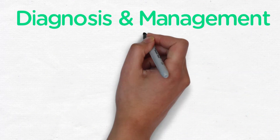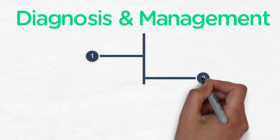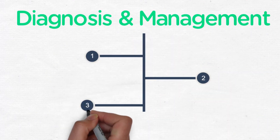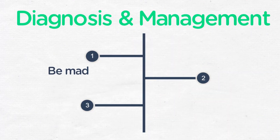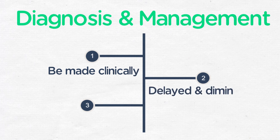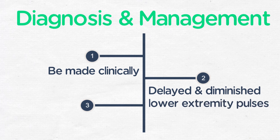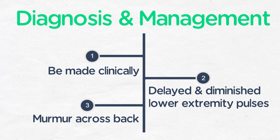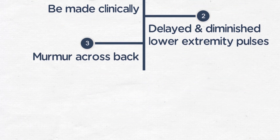The diagnosis of coarctation can and should be made clinically. Feeling pulses in the upper and lower extremities can reveal diminished and delayed lower extremity pulses. One might also hear a murmur across the back related to collateral flow in older patients.